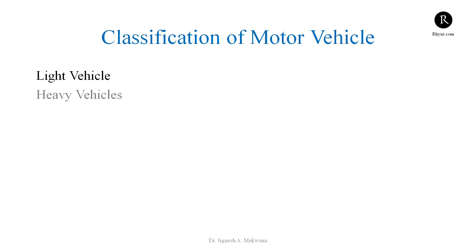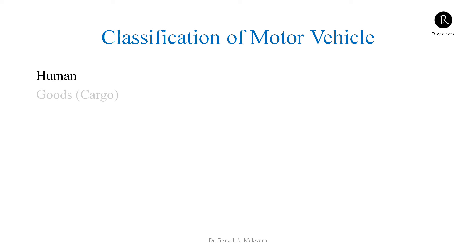Then light vehicle, heavy vehicle, heavy construction vehicles — we can classify according to that also. Vehicles can also be classified according to what purpose they are used for: transportation of humans, or transportation of products — that means human transportation or goods and cargo transportation vehicles.